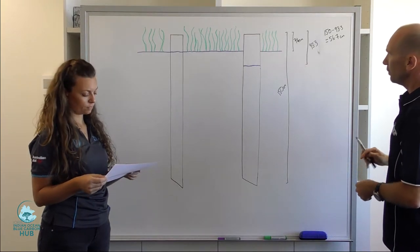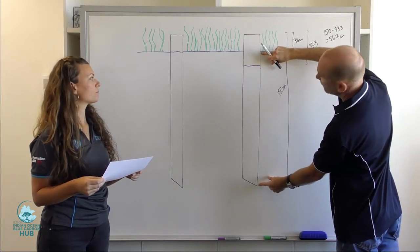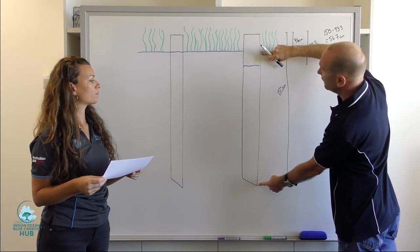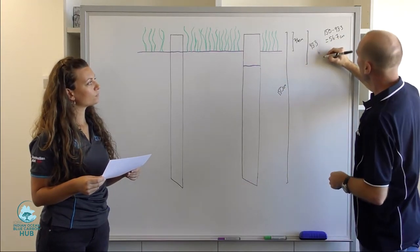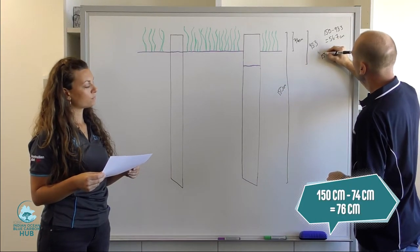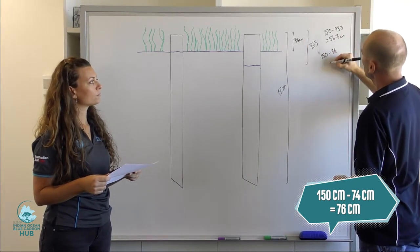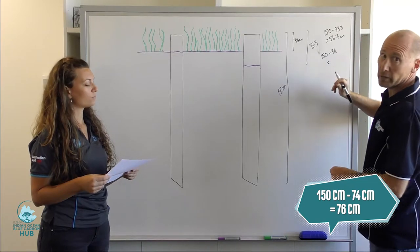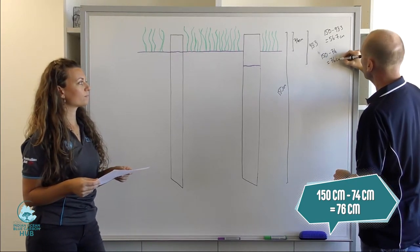We also want to know the amount of core that is in the sediment in total. And so that's also by subtraction. 150 minus 74. And again, I can do that in my head. We can get 76 centimeters.